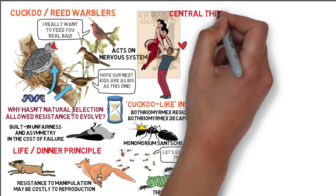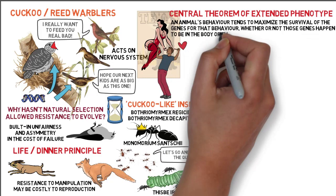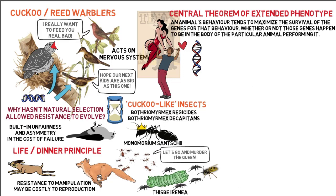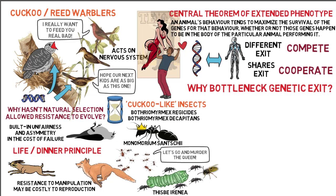Dawkins therefore states the central theorem of the extended phenotype as: an animal's behavior tends to maximize the survival of the genes for that behavior, whether or not those genes happen to be in the body of the particular animal performing it. Hence both the genes and individual survival machines have complementary and equally important roles. In contrast, groups of animals do not share an exit because individuals can gain by competing against each other, whereas all genes in an individual animal are aligned because they exit through the egg or sperm. A beehive behaves like a single vehicle because the future of the genes is vested with one queen. But why did genes create large vehicles with only a single bottleneck genetic exit route? Why did genes cooperate to make large survival machines to live in?